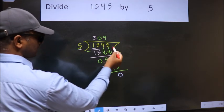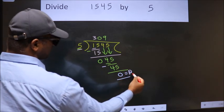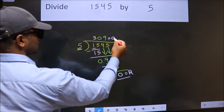No more numbers to bring it down, so we stop here. This is our remainder. This is our quotient.